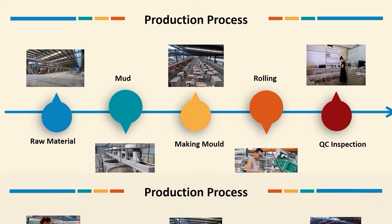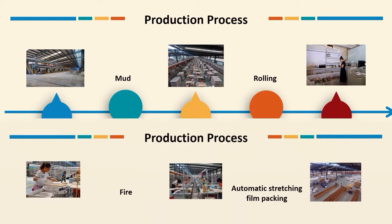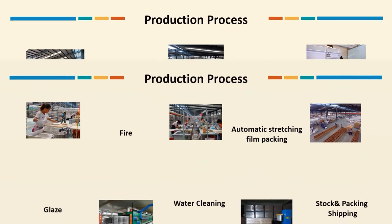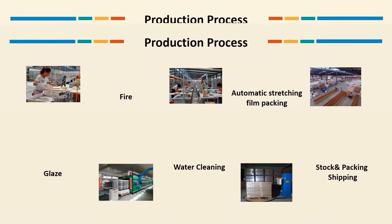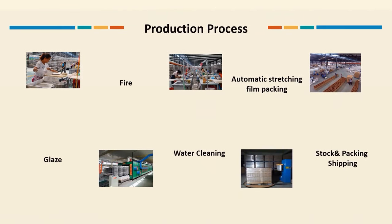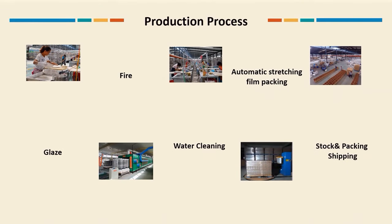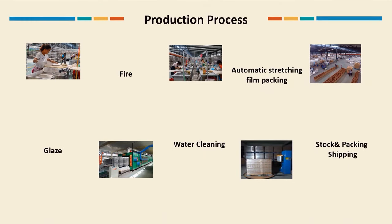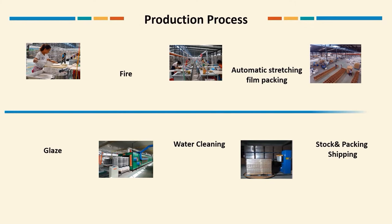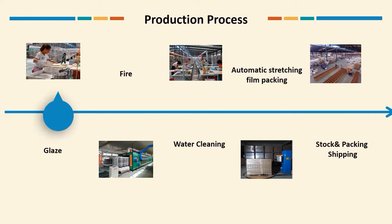Then comes glazing. Glazing is the process of applying a layer of glaze to the surface of the ceramic body. There are usually three types of glaze: dip glaze, well glaze, and drip glaze.